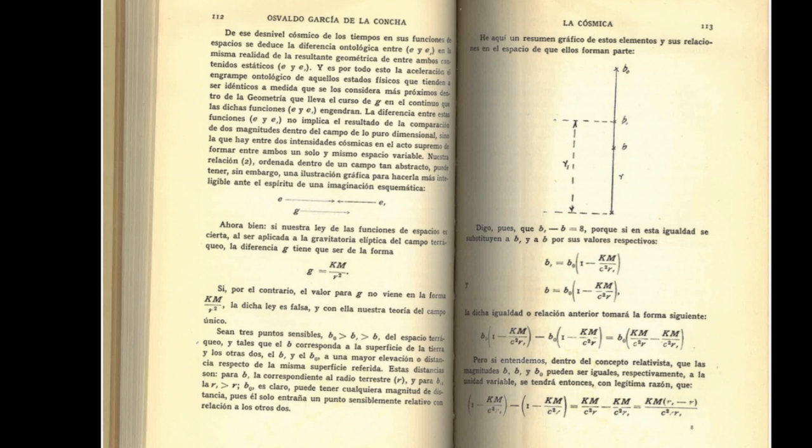But if we understand within the relativistic concept that the magnitudes B comma B and B subscript zero can be equal respectively the variable unit we will have then with legitimate reason. But when B comma and B mark two points in the sensible space that are infinitely close.